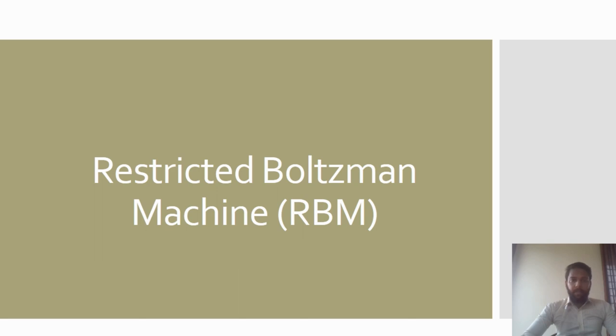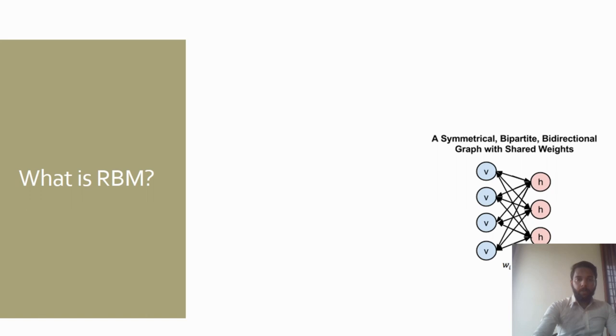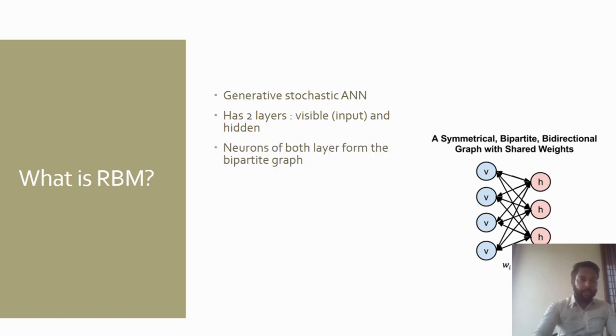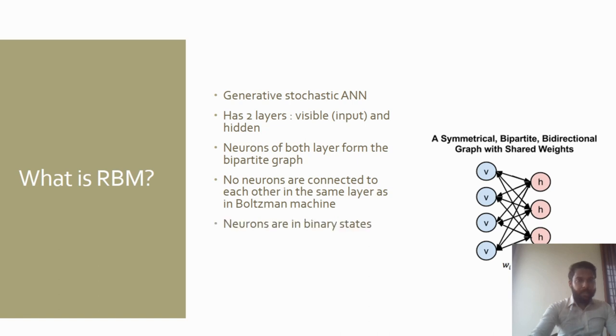Hello everyone, today we will be discussing the Restricted Boltzmann Machine. So what is RBM? RBM is a shallow two-layer artificial neural network with the first layer being visible and the other being hidden. Each circle represents a neuron-like unit called a node. Nodes are connected to each other across layers, but no two nodes of the same layer are linked.